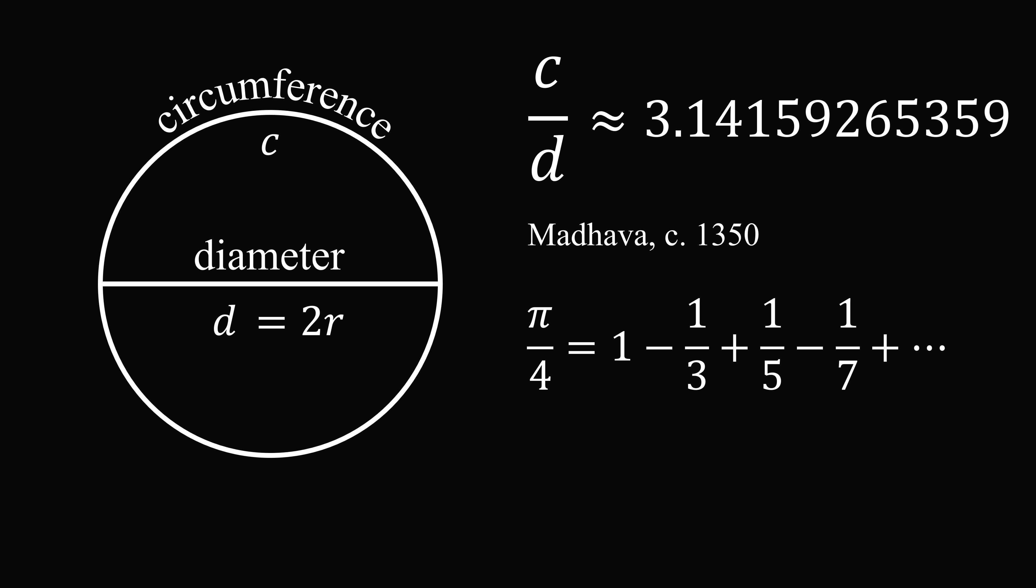Now, all the mathematicians who care about every single detail and every single word I say, don't be so picky about how things are named. This may be known in literature as the Leibniz series, which was discovered hundreds of years later. But you know that it came from Madhava first.